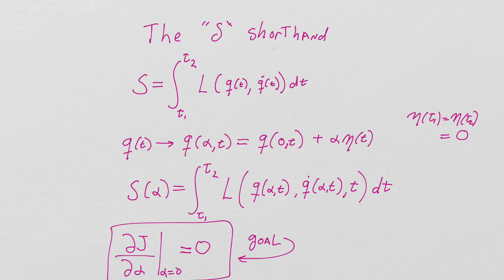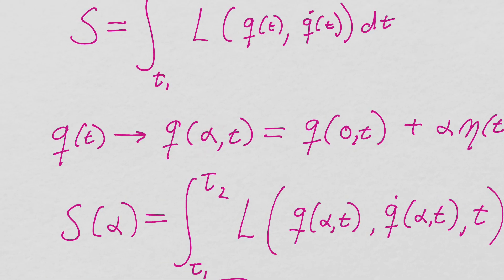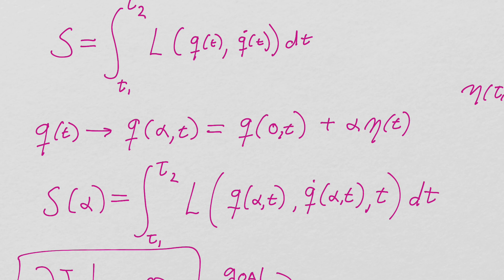Now what we're going to do this time is we're going to examine this generalized coordinate, which is a function of time, and we're going to blow it up into two parts. We're going to add another variable to it, alpha. So q is not only a function of time, it's also a function of alpha. But we want it to be very clear that if we set alpha to be zero, q is only a function of time.